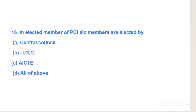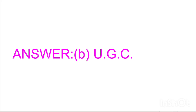Next question: In elected members of PCI, 6 members are elected by — Option A: Central Council, Option B: UGC, Option C: AICTE, Option D: all of the above. Answer is Option B, UGC.